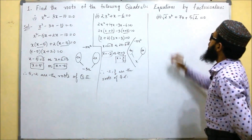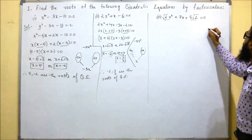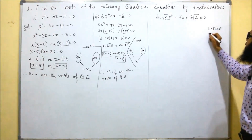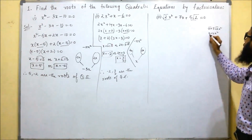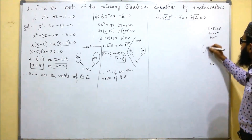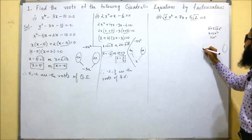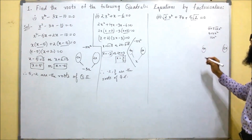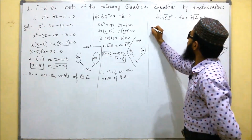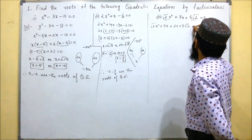The next equation is somewhat different. We multiply the first and last terms: root 2 times 5 root 2 gives 5 times 2, which equals 10x squared. The middle term is 7x. We need two terms that multiply to give 10 and add to give 7x. Those two terms are 5x and 2x — 5 plus 2 equals 7. We substitute these in place of 7x: root 2 x squared plus 5x plus 2x plus 5 root 2 equals 0.